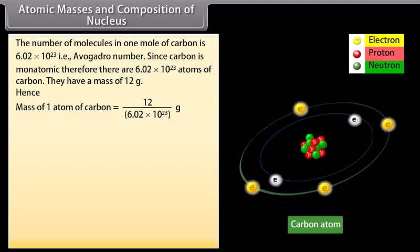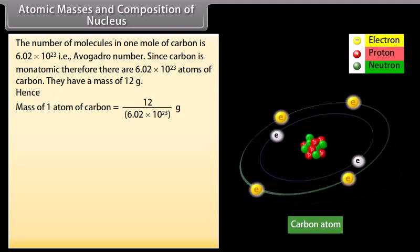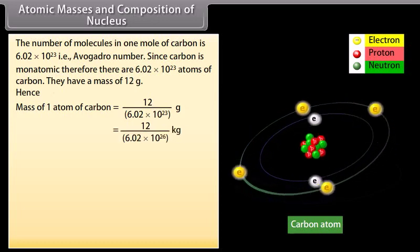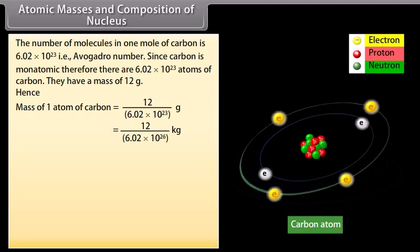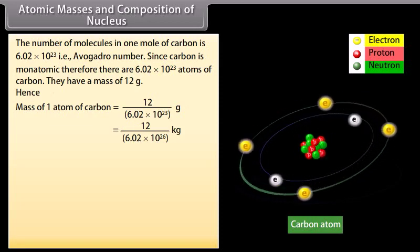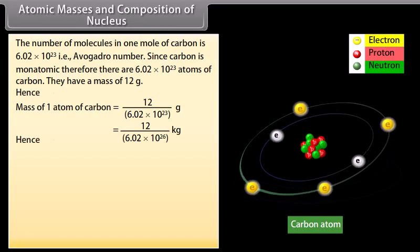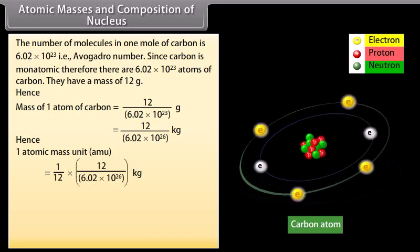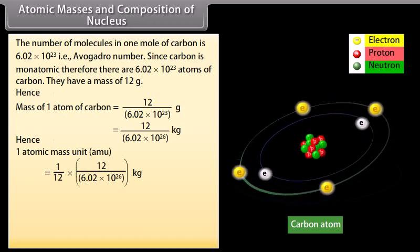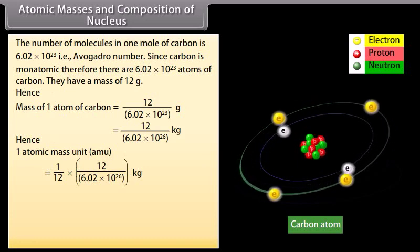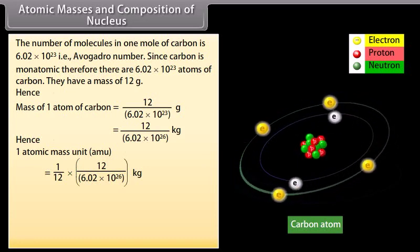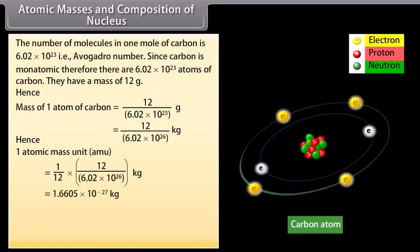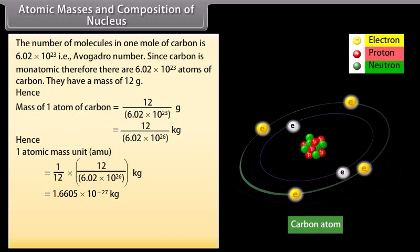Hence, mass of 1 atom of carbon is equal to 12 / (6.02 × 10^23) gram, which is equal to 12 / (6.02 × 10^26) kilogram. Therefore, 1 atomic mass unit is equal to (1/12) × 12 / (6.02 × 10^26) kilogram, which is equal to 1.6605 × 10^-27 kilogram.